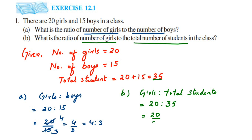We change this into a fraction and cancel in the five times table — five fours are 20, five sevens are 35 — so we get 4 by 7. Converting back into ratio form, this becomes 4 is to 7. So the ratio of number of girls to the total number of students is 4 is to 7. I hope this question is clear. If you have any questions or doubts, you can drop a comment. Thank you so much for watching.